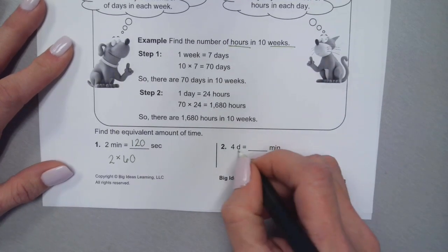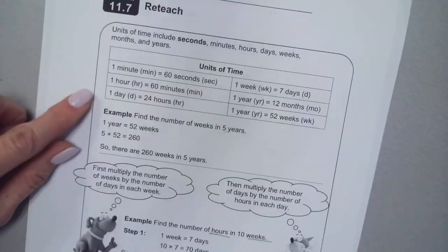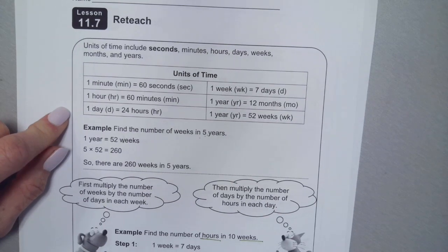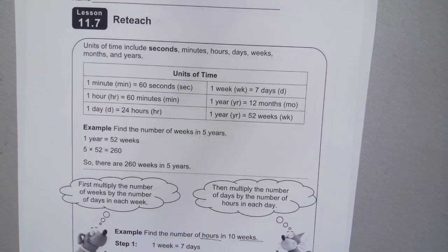Four days—I'm going from days to minutes. Do I know how many minutes there are in a day? No, I don't. I know how many minutes are in an hour, and I know how many hours are in a day. There are 24 hours in a day.